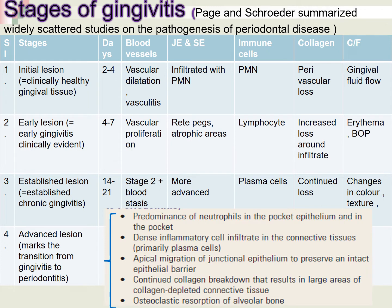The established lesion occurs 14 to 21 days after plaque accumulation, combining features of stages two and three. More advanced junctional and sulcular epithelium changes occur, with plasma cells as the predominant cells, continued collagen loss, and changes in color, texture, and contour. The advanced lesion marks the transition from gingivitis to periodontitis, with predominance of neutrophils, dense inflammatory infiltrate, apical migration of junctional epithelium, continued collagen loss, and osteoclastic absorption of alveolar bone.